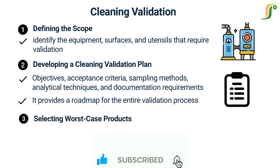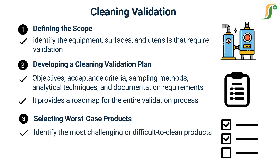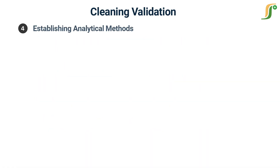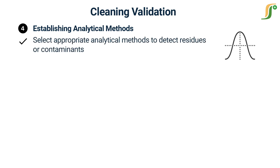Step 3: Selecting worst-case products. We need to identify the most challenging or difficult-to-clean products that will be used as worst-case scenarios during the validation study. This ensures that our cleaning procedures can effectively remove residues from even the toughest cases. Step 4: Establishing analytical methods. We select appropriate analytical methods to detect residues or contaminants.